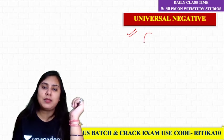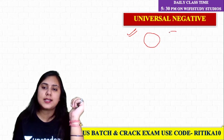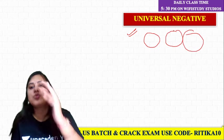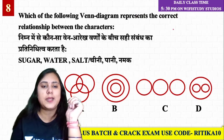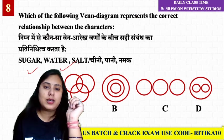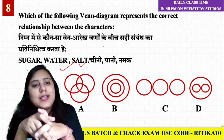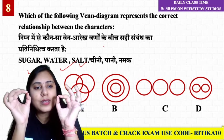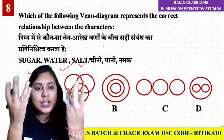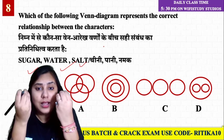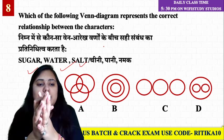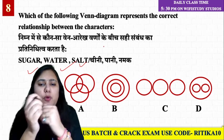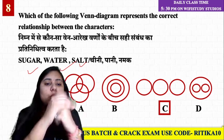Universal Negative means when the three entities have no relation to each other — all three are completely different. For example, Water, Salt, Liquid form — they have no relation to one another. When the answer results in no overlap, option C will be the answer.